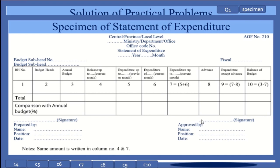This is a specimen of the statement of expenditure, prepared at the end of every month. It shows the summary of annual appropriation of the budget under different budget heads, release up to the current month, expenditure up to the previous month, expenditure of current month, expenditure up to current month, advance amount, expenditure except advance, and balance of budget. The AGF number of monthly expenditure has been changed to AGF number 210 from fiscal year 2076-77, which was previously coded as AGF number 13.